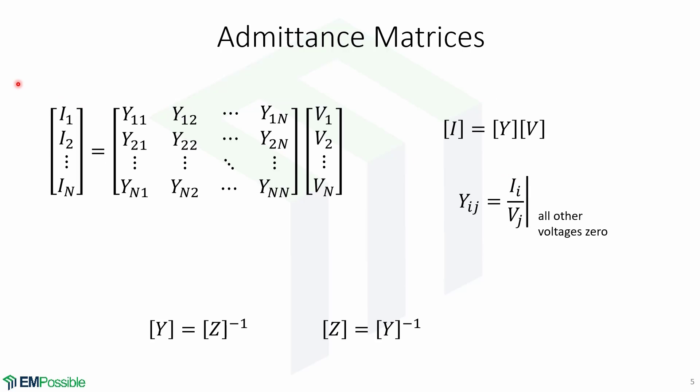Likewise, we can also define an admittance matrix Y that relates the currents to the voltages. We measure the admittance element Yij by driving port J with voltage Vj, short circuit all other ports so that all other voltages are zero, and we measure Ii.